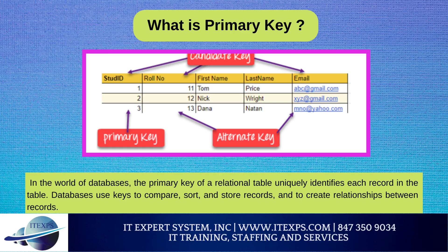Primary key example: Imagine you have a students table that contains a record for each student at a university. The student's unique student ID number is a good choice for a primary key. The student's first and last name are not good choices because more than one student might have the same name. Other poor choices include zip code, email address, and employer, all of which can change or represent many people. The identifier used as a primary key must be unique. Social security numbers can be a good choice, though even they can change due to identity theft reassignment or may not exist for some people.